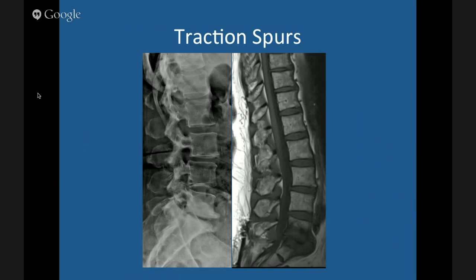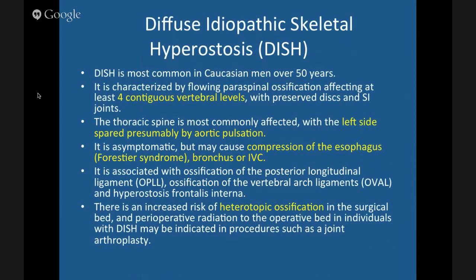Here's another example of a big traction claw — a traction osteophyte. See the end plate? This is a degenerative disc on MRI. There's subchondral sclerosis and the osteophyte or bone forms far away from the end plate. That's a traction spur.